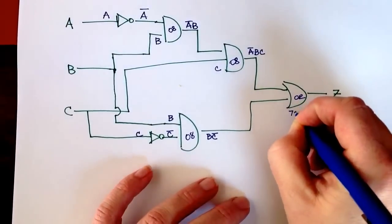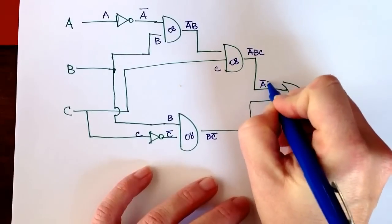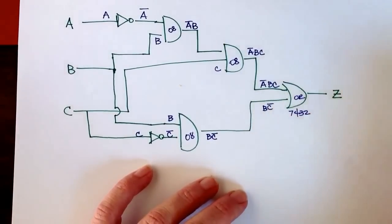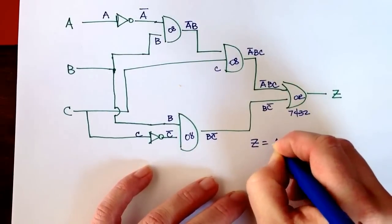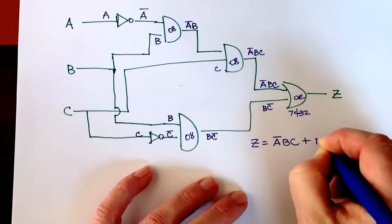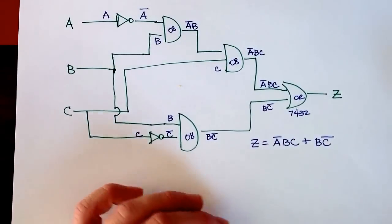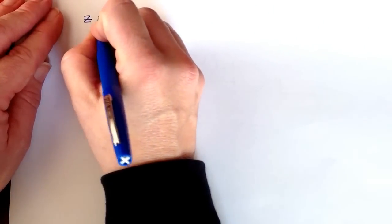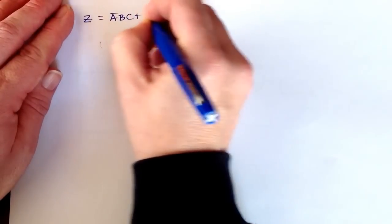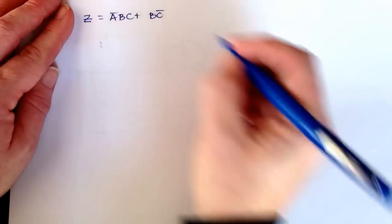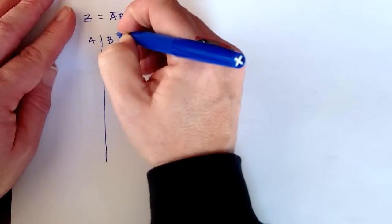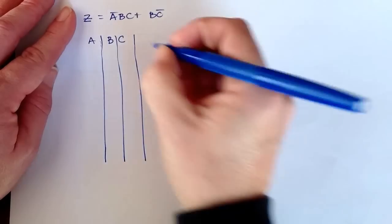This is an OR gate, the 7432. So we have NOT A AND B AND C, OR B AND NOT C. Z equals NOT A AND B AND C OR B AND NOT C. Now I'll rewrite that expression and make a three-input truth table with inputs A, B, and C and output Z.